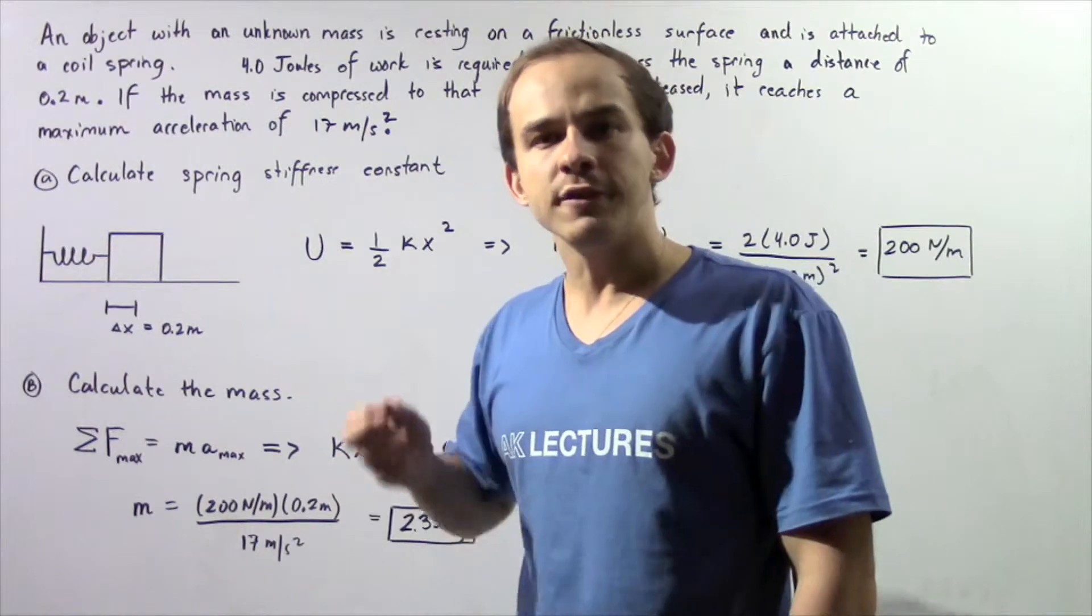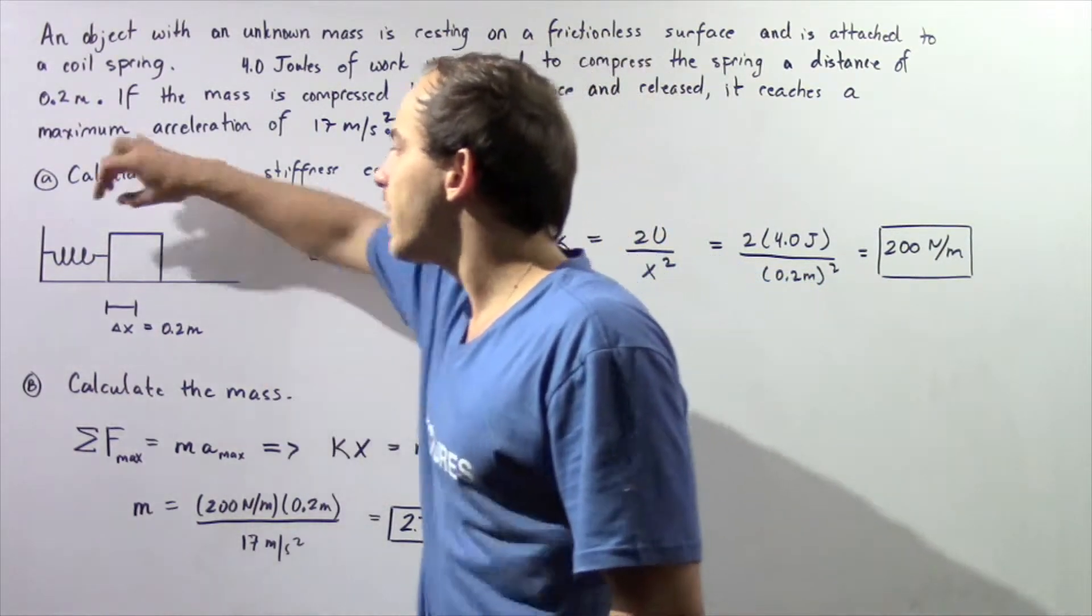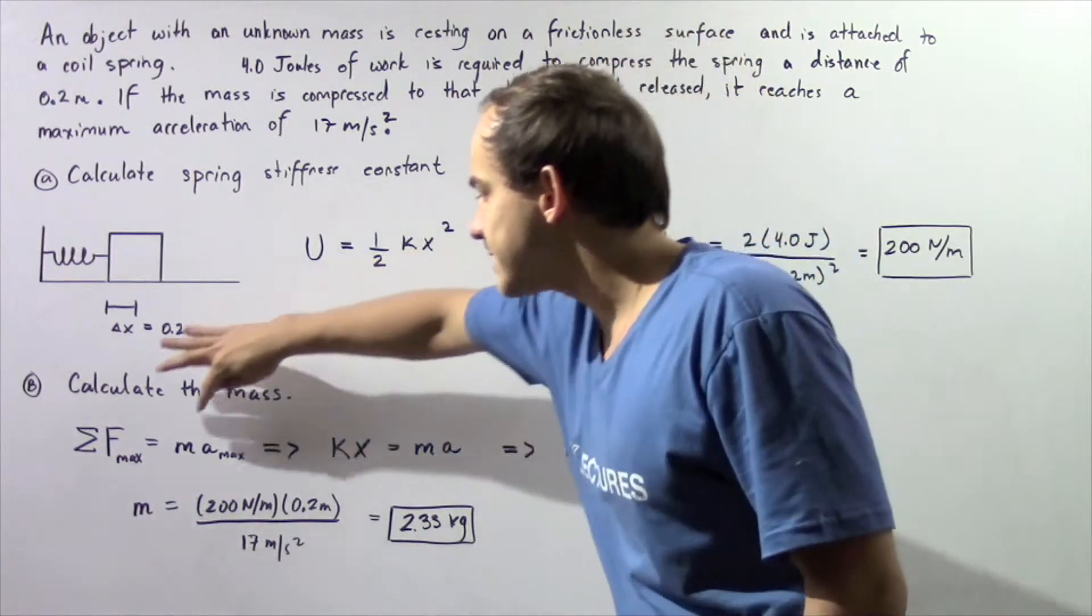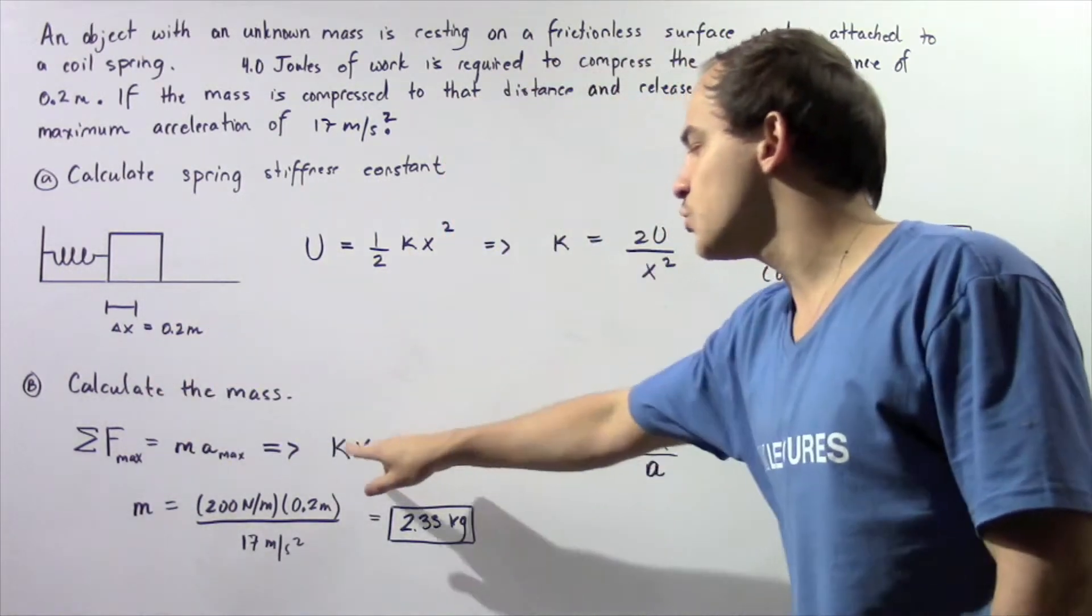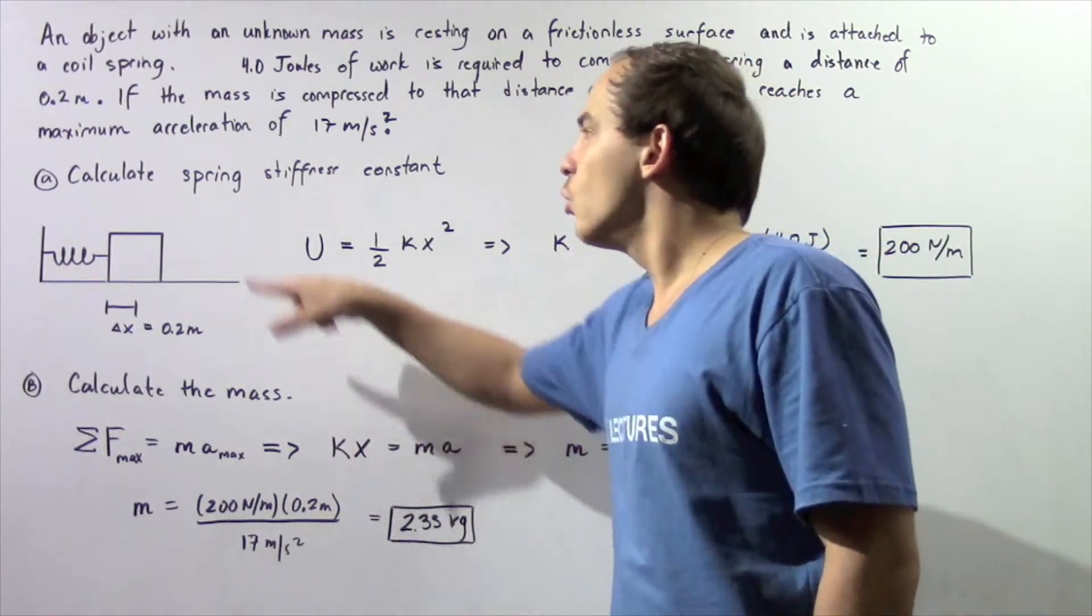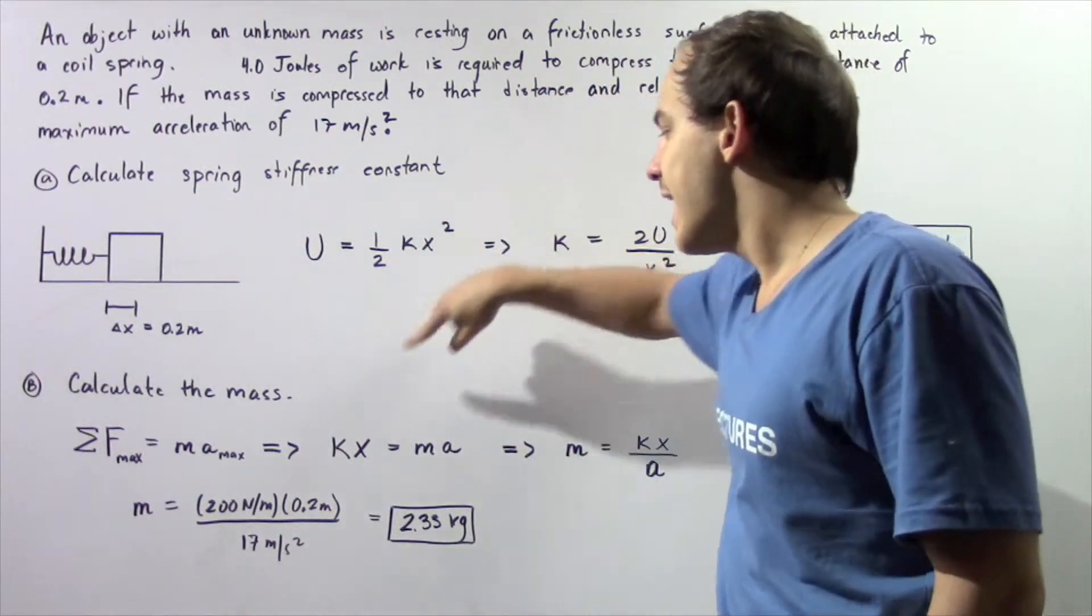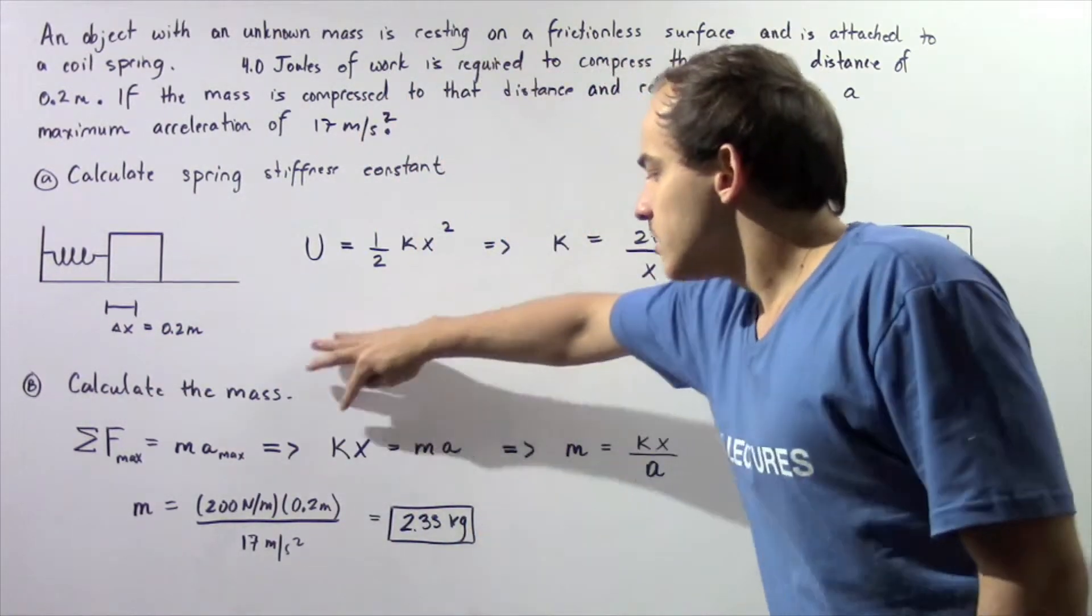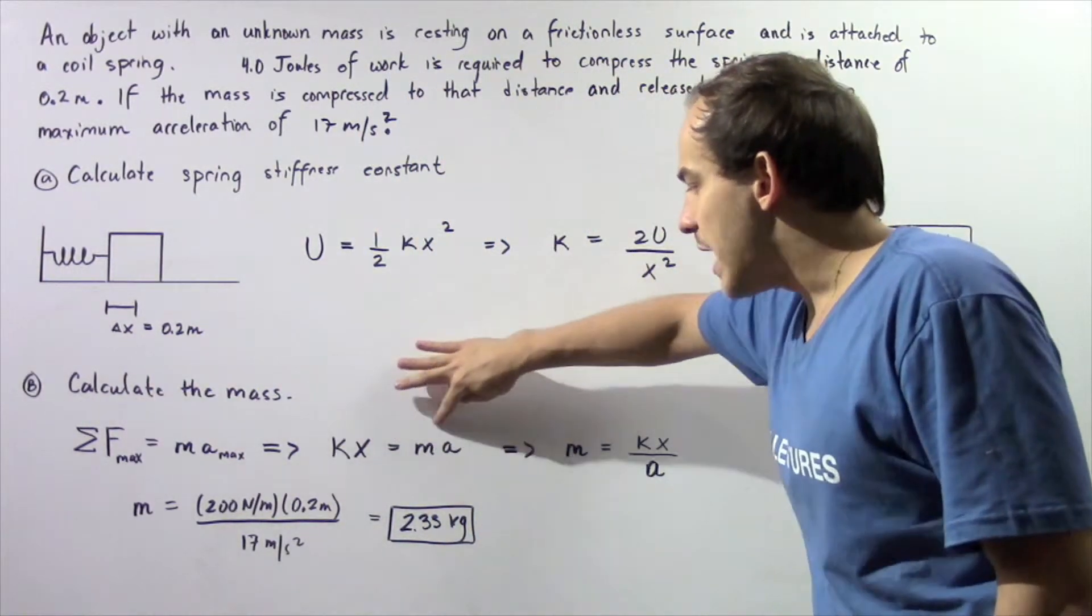Well, it's the restoring force created by the spring, which obeys Hooke's law. That means ma = kx, where k is our spring constant which we calculated in part A, and x is our displacement of the spring. So kx = ma.